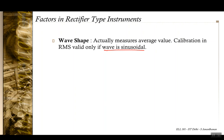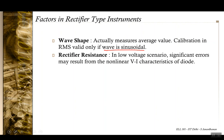The second factor is rectifier resistance. When the voltage across the diode is very small, significant error results from the non-linear voltage-to-current characteristics of the diode. Appropriate compensation circuits can address this, but the diode cannot be treated as ideal.